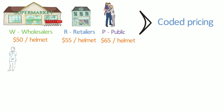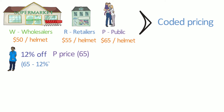Staff at Neil's company are allowed items at a discounted rate of 12% off the general public price. This means Neil, using a discount against the account of the staff, can apply the list price less a standard 12% discount. Staff will pay a list price of $57 per helmet. This is discounted pricing.